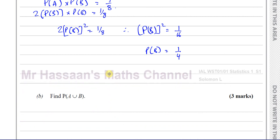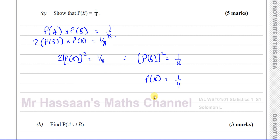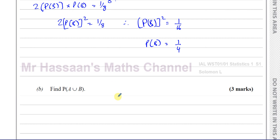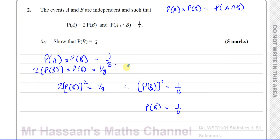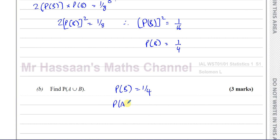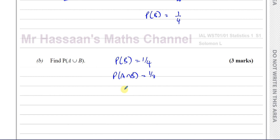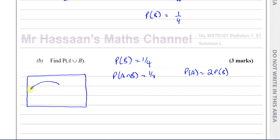Now we go to part B — we need to find the probability of A union B. Let's write down what we have. We know the probability of B is 1/4. Even if we didn't get part A, we can still use that value in part B. We're also told the probability of A intersection B is 1/8, and the probability of A is twice the probability of B. I really like to draw Venn diagrams in these questions — it helps to picture what's happening, and knowing how to do Venn diagram shadings is really important in this topic.